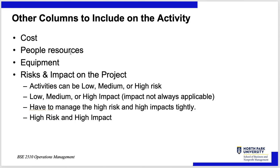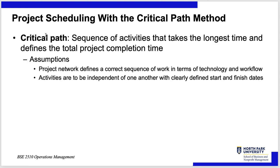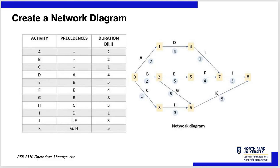We are going to teach the Critical Path Method. We'll use durations, precedents, and a network diagram to find out how long the whole project will take. If I look at this and just add up all the tasks — 5, 10, 14, 18, 26, 30, 38 weeks — that would be wrong, because obviously you can do things simultaneously.